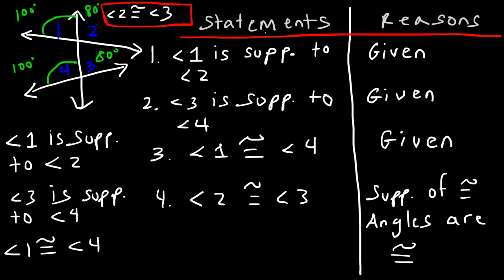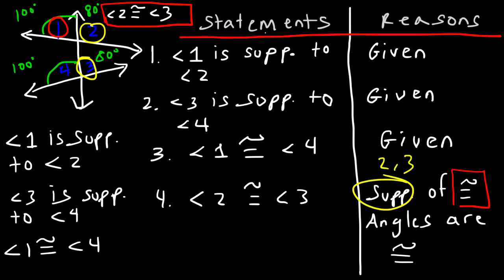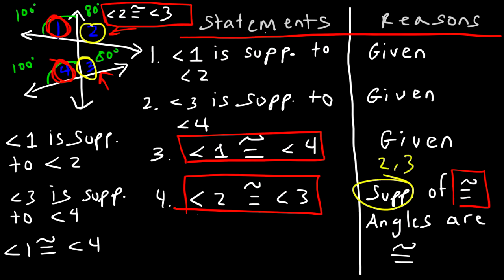Let's make sense of that reason: supplements of congruent angles are congruent. The supplements being referred to are angle two and angle three. Angle two is supplementary to angle one, and angle three is supplementary to angle four. The congruent angles are angle one and angle four, because in statement three we said they are congruent. So the supplements — angles two and three — of congruent angles, which are angles one and four, are congruent. That's how you can prove that angles two and three are congruent, because they're supplementary to congruent angles.